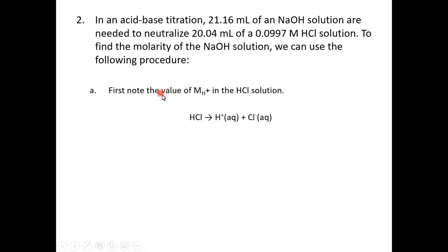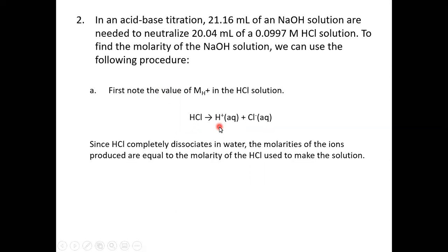The first thing we have to do is note the molarity of hydrogen ions in our HCl solution. The hydrogen ions are what react with the hydroxide ions to neutralize them in the titration. HCl fully ionizes into hydrogen ions and chloride ions in a one-to-one ratio, so whatever the molarity of my HCl is, that is also the molarity of my hydrogen ions.